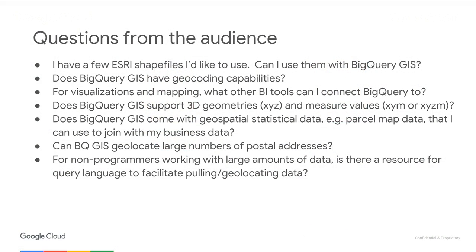Next question: does BigQuery GIS have geocoding capabilities? We rely on the Google Maps APIs for this — BigQuery itself does not have geocoding built in. But you can call an API in a different part of your program to augment the table you're looking at with geocoded data, or you can call an external API as part of a Dataflow job: read out a BigQuery column through a Dataflow job, call that API, augment the data, and write it back into BigQuery.